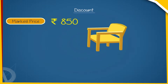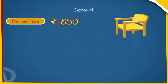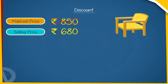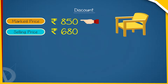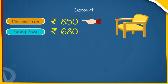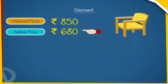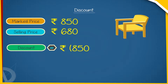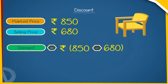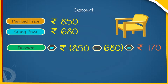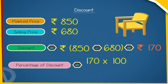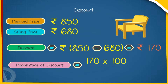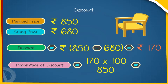A chair marked at Rs. 850 is available for Rs. 680. What is the amount of discount and percentage of discount? Marked price equals Rs. 850. Selling price equals Rs. 680. Therefore, discount equals Rs. 850 minus 680 equals Rs. 170. Percentage of discount equals 170 into 100 upon 850 equals 20%.